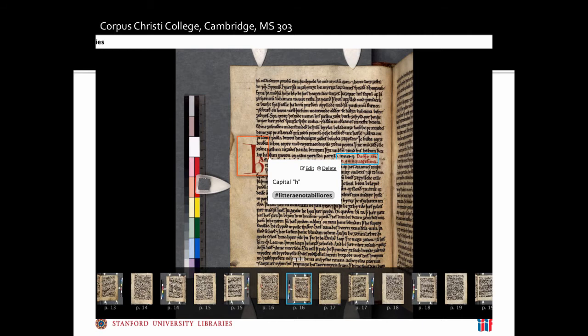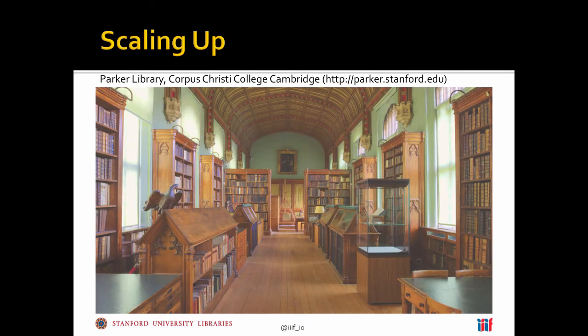Another scholarly use case is basic annotation. Here is an example of training data we produced for a project where we had students capture large initials, rubrics, and other navigation features within the manuscript. This was done by hand—they would draw a box around a region of interest and tell us what it was. But that doesn't scale very well when we're talking about tens or hundreds of thousands to millions of images across the corpus of medieval manuscripts.